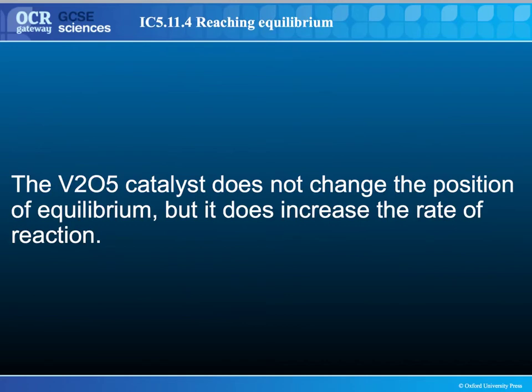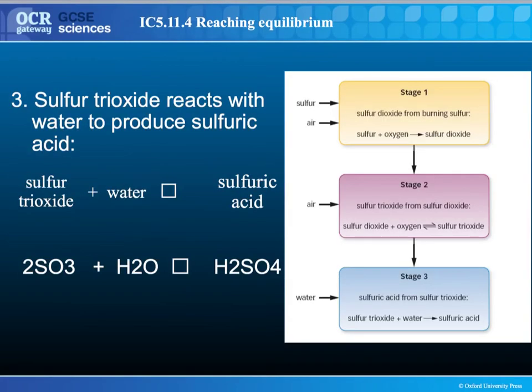And finally, a catalyst. Please be aware: catalysts do not change the position of equilibrium — they only increase the rate. So if asked what a catalyst does to the position of equilibrium, the answer is it does not affect it; it only increases the rate. The V₂O₅ catalyst is used to increase the rate at which sulfur trioxide is produced. The final stage of the contact process is another forward reaction: the sulfur trioxide made in stage 2 is reacted with water to form sulfuric acid.